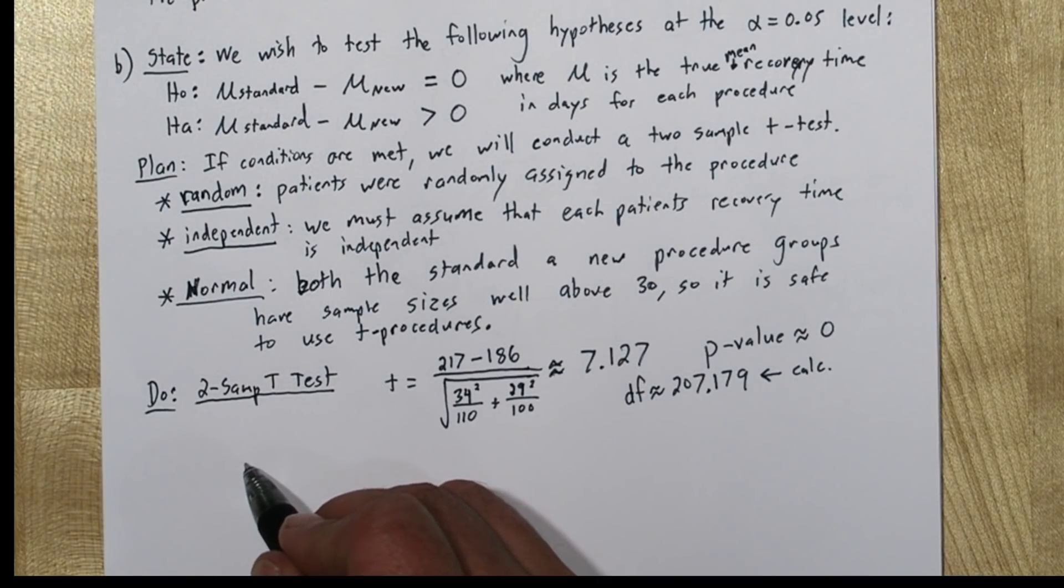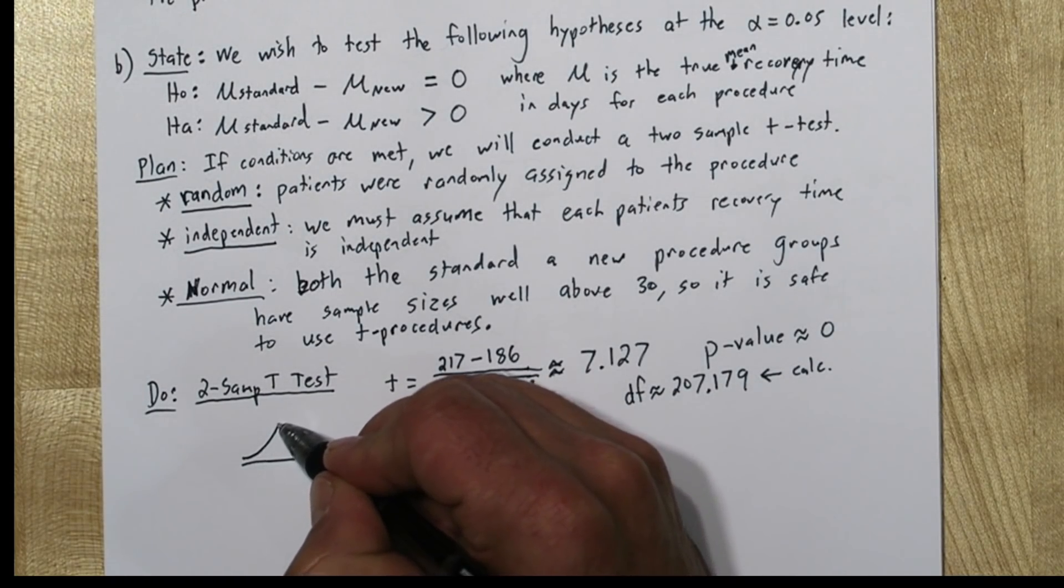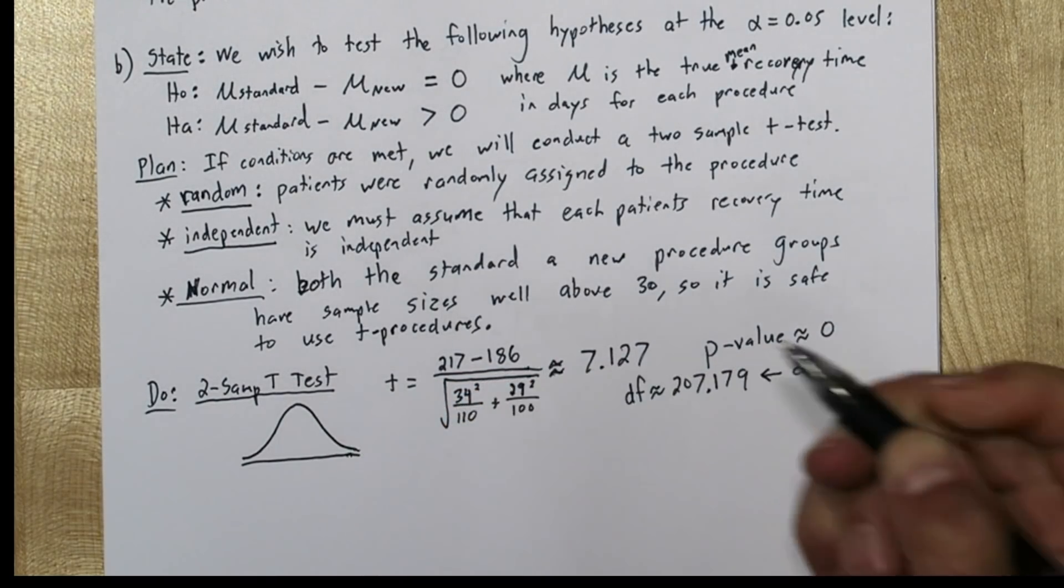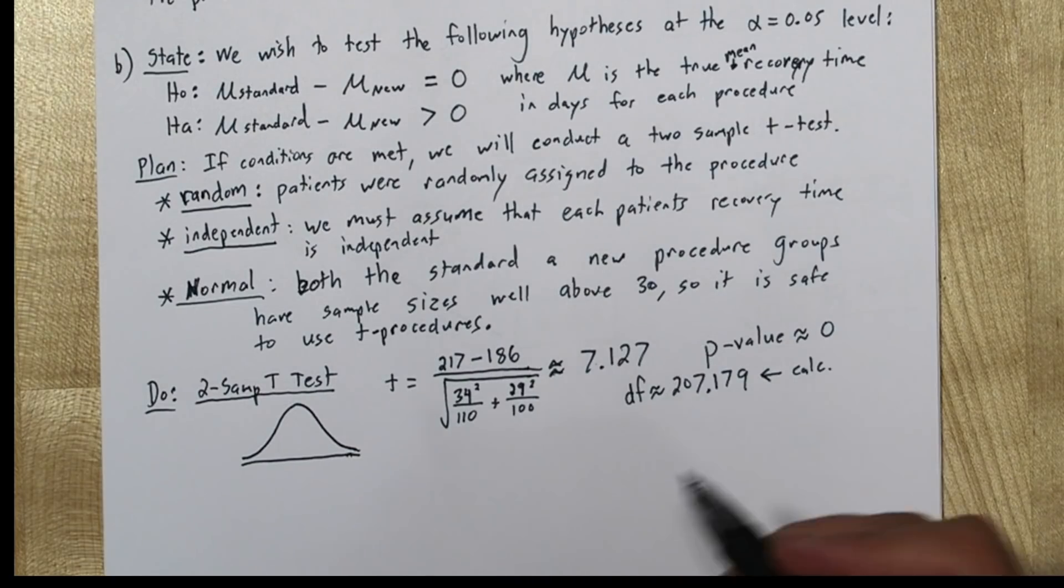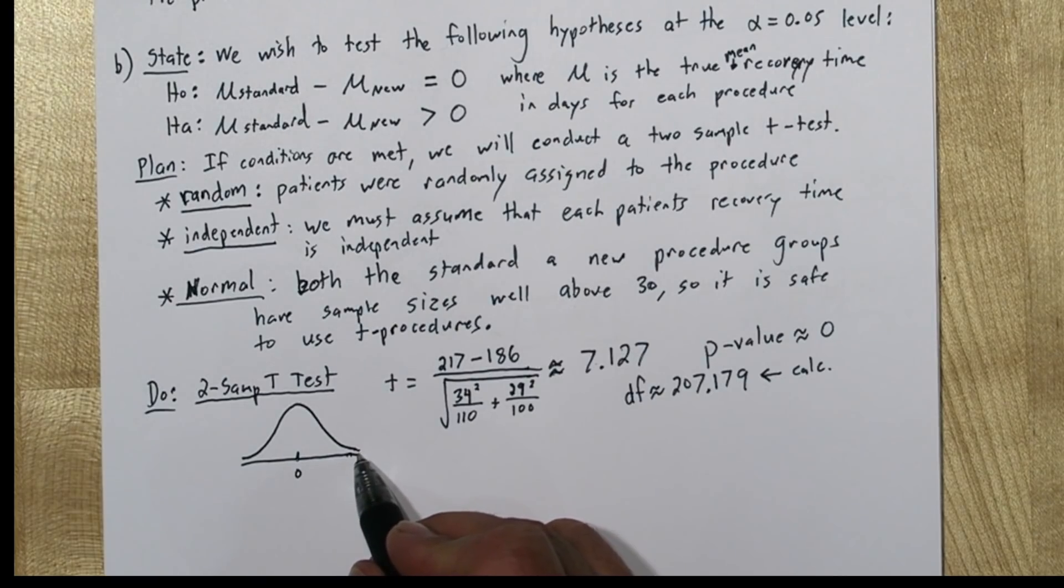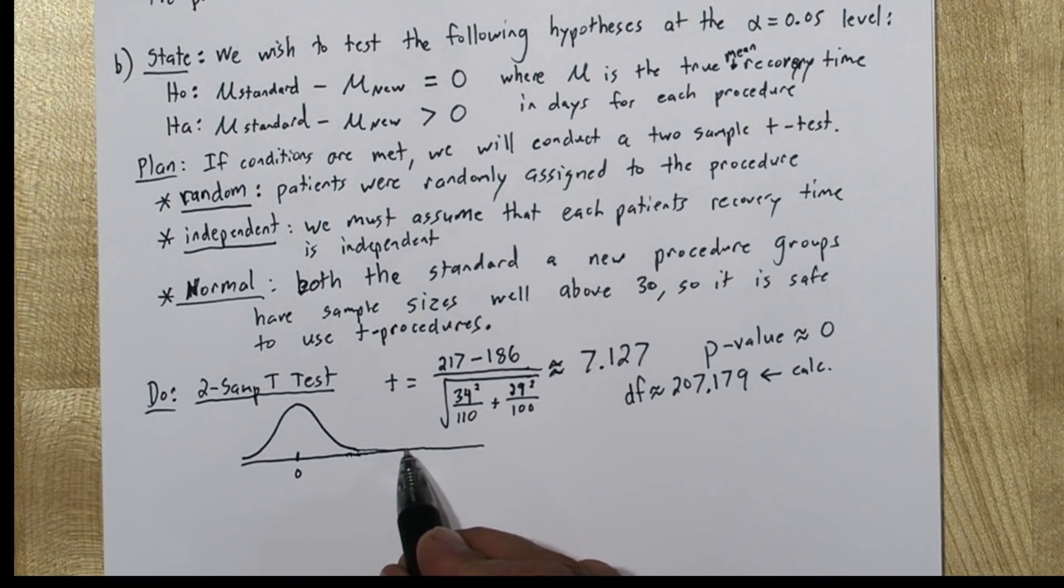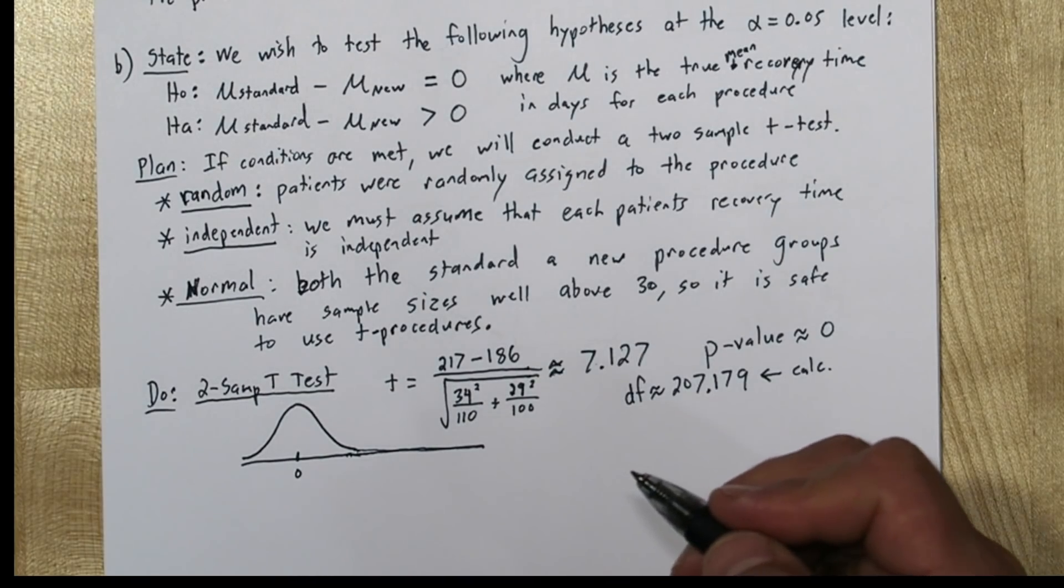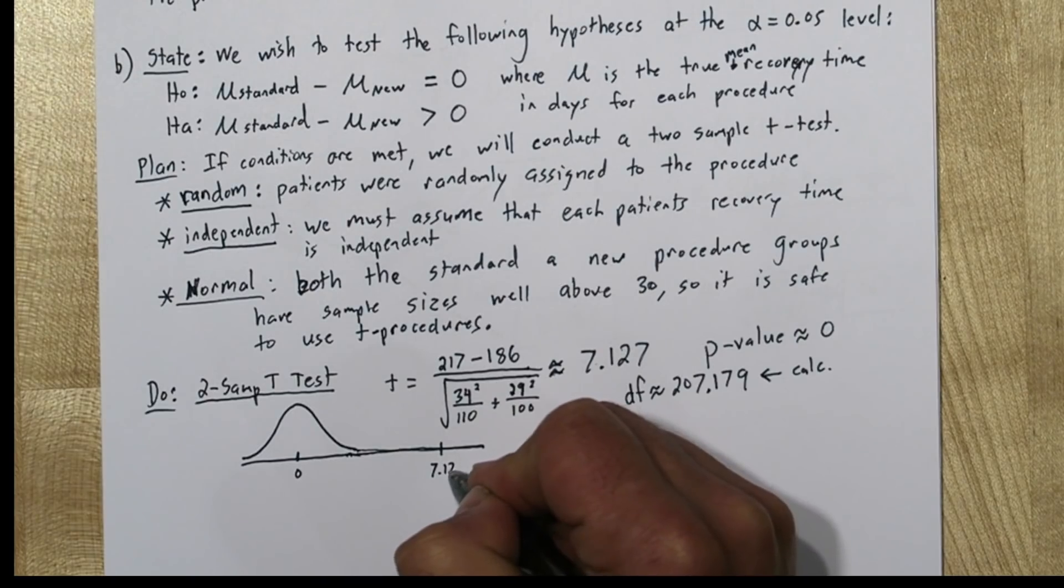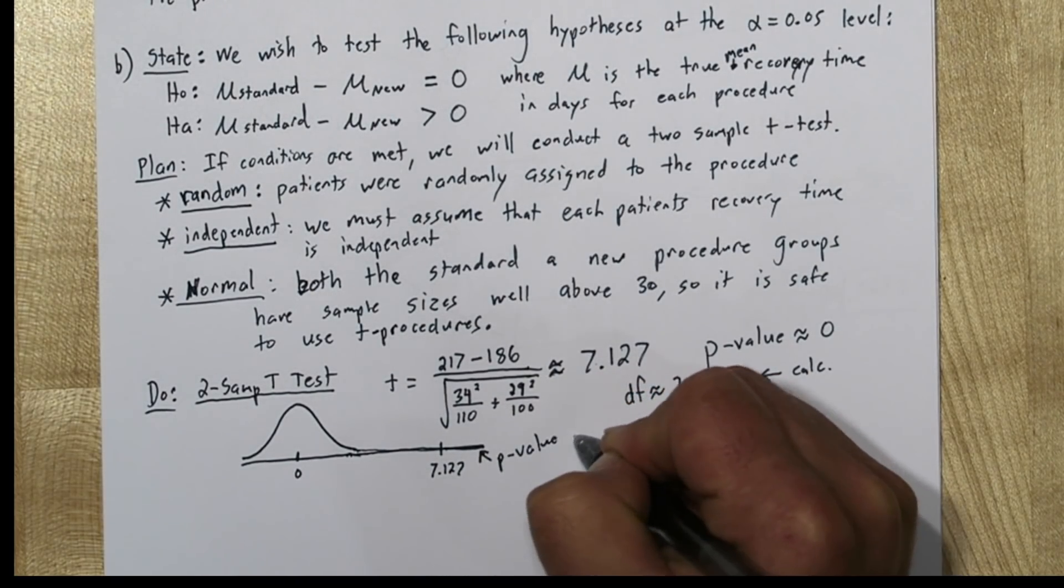Now it's always a good idea to draw a curve. Since our p-value is 0, it's going to be a pretty boring sketch, but I'm just going to draw a quick little t distribution. Our test statistic is 7.127. So here's 0 right here, 7 is going to be way out here. Maybe it's like here. And so here's our p-value down here.